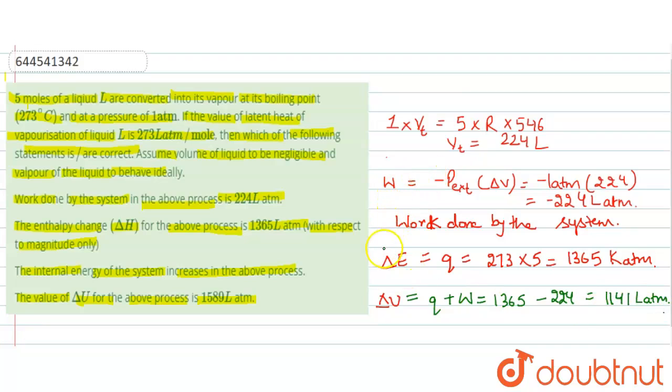So from here we can see that our first statement - work done by the system in the above process is 224 liters - yes it is correct. The second statement - the enthalpy change delta H for the above process is 1365 liters atmosphere - which is also correct. And the third statement - internal energy of system increases with the above process - it is also correct. But the delta U value is 1141 liter atmosphere, so this statement is wrong.